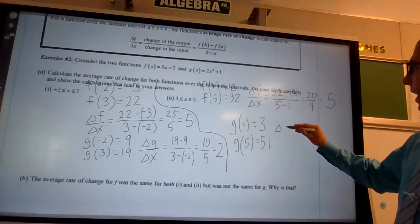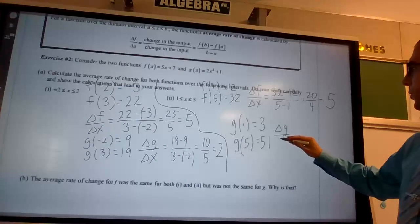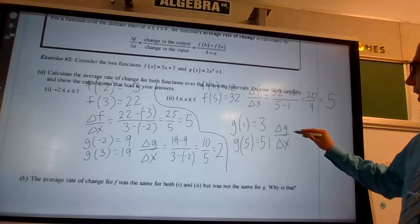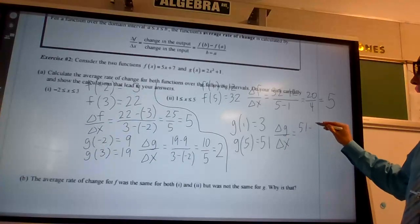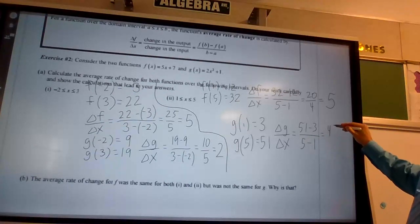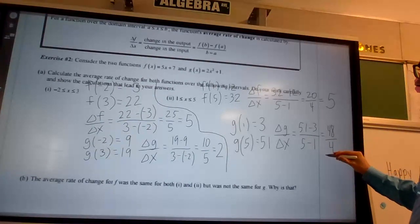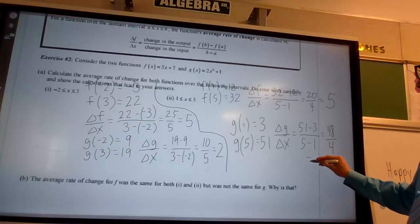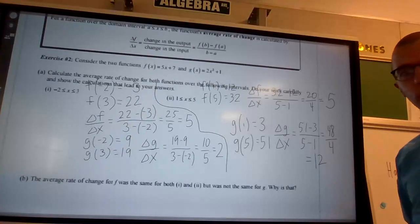Now again, to find that average rate of change, take my change in g over the change in x, 51 minus 3 over 5 minus 1, which equals 48 over 4, which equals 12.